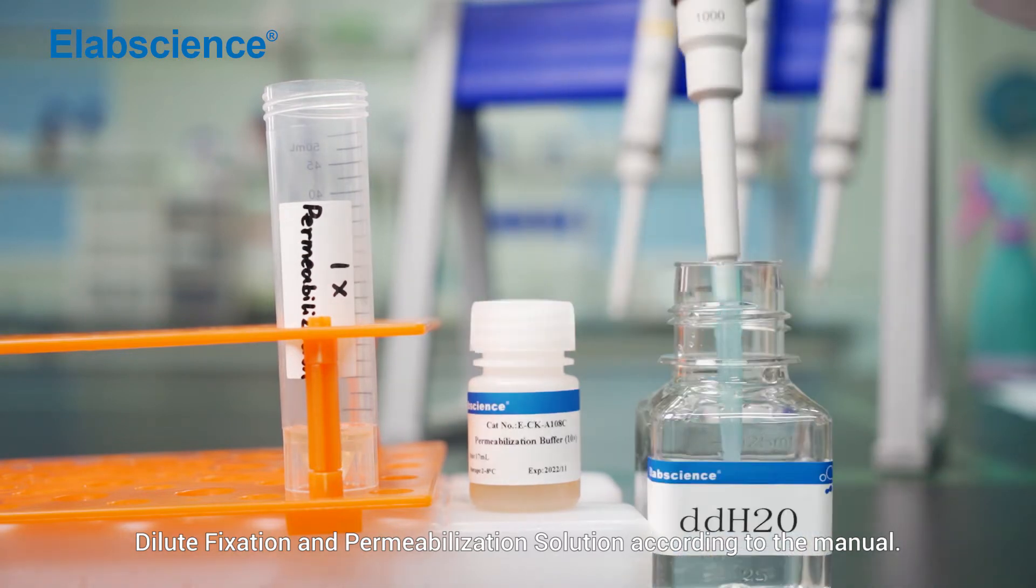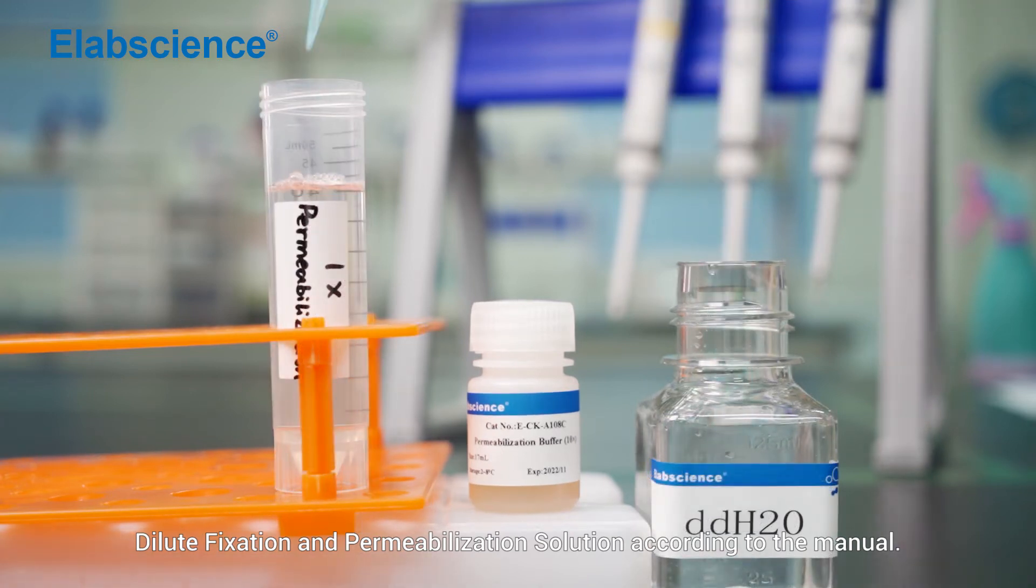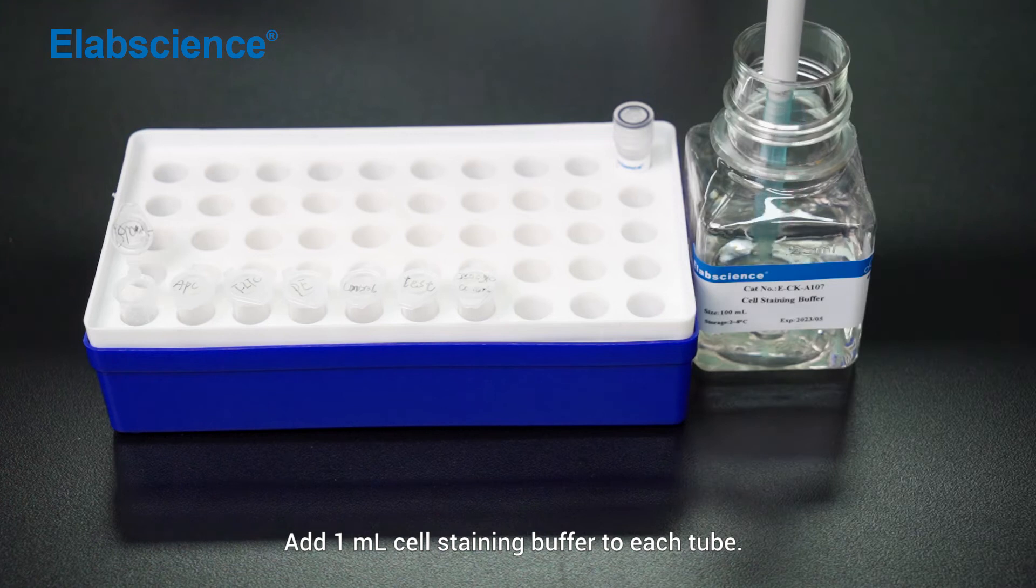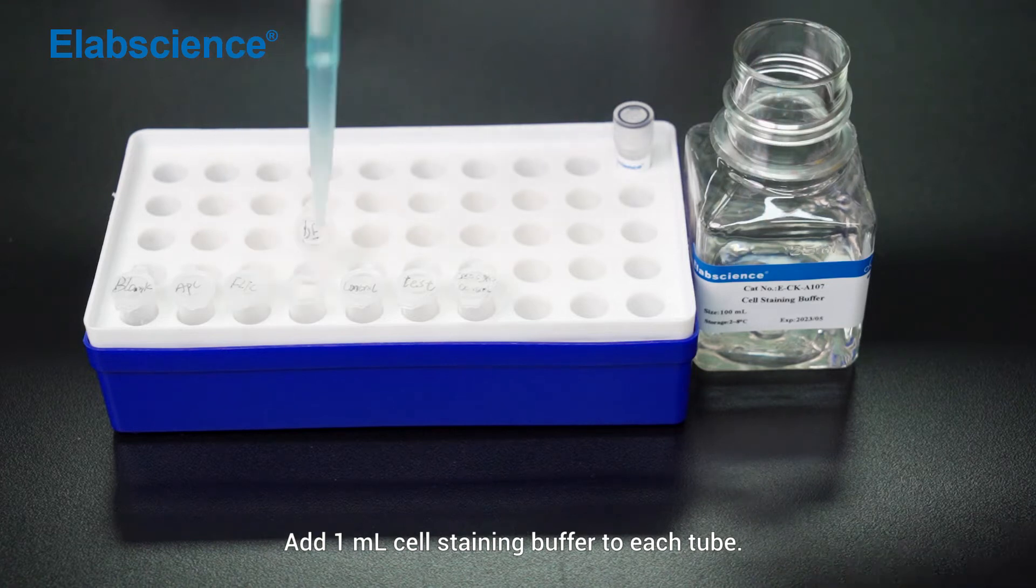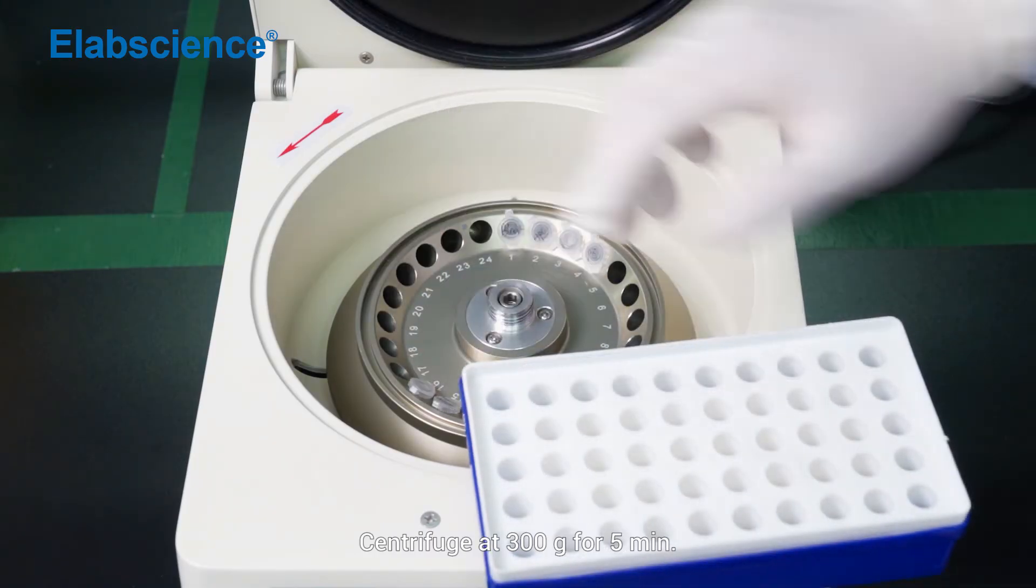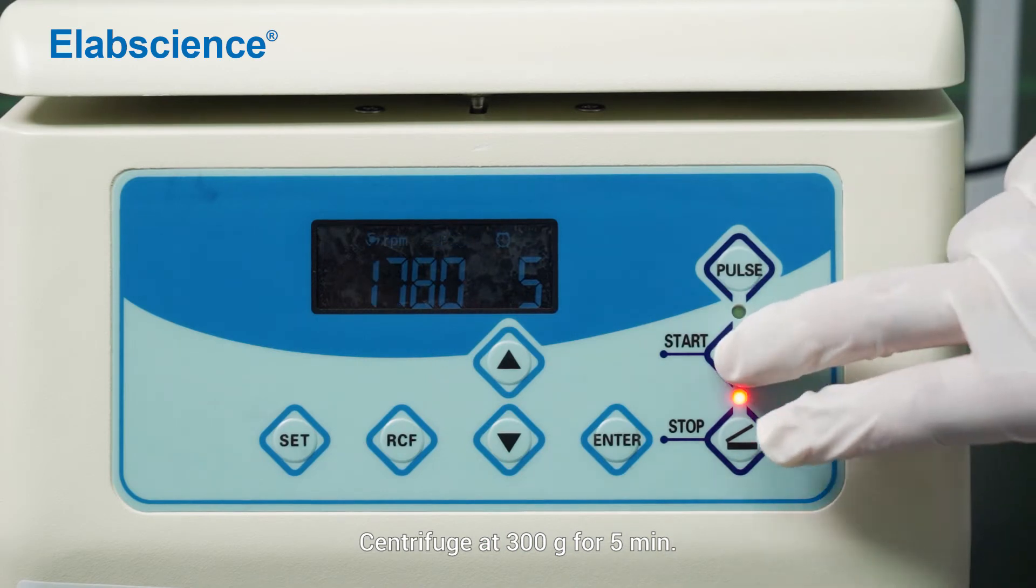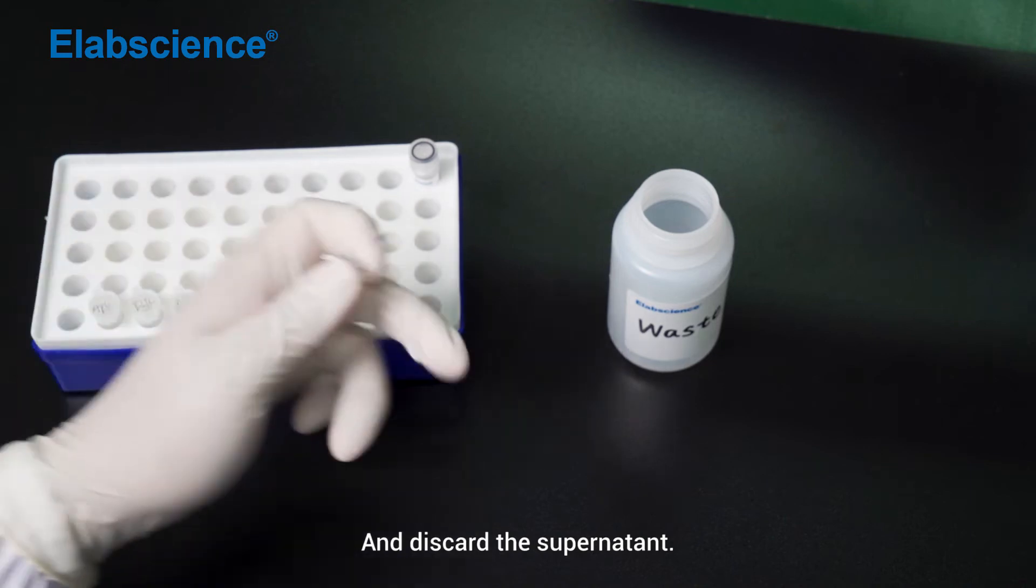Add 1 ml of cell staining buffer to each tube. Centrifuge at 300 times gravity for 5 minutes and discard the supernatant.